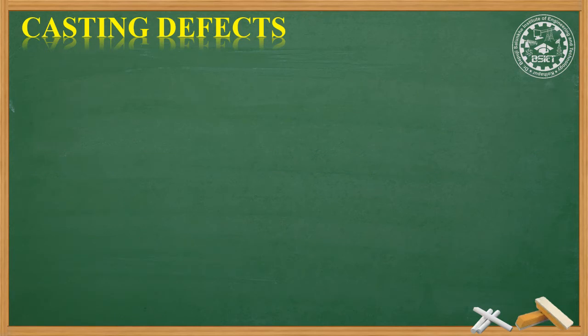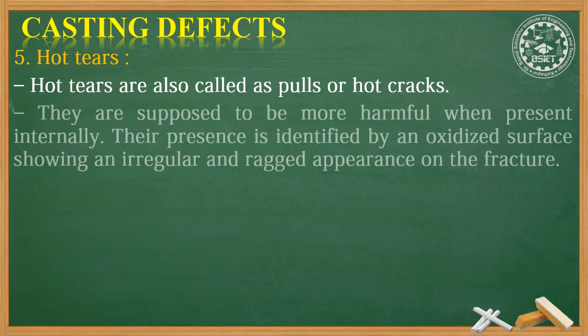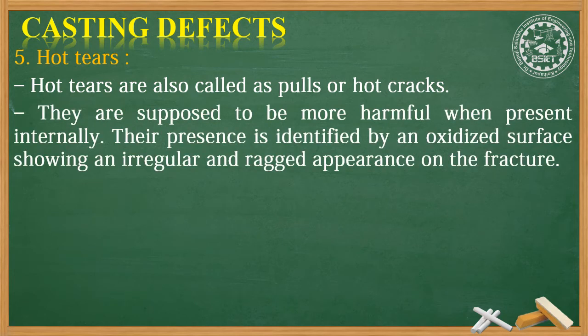The fifth casting defect is hot tears, also called pulls or hot cracks. They are supposed to be more harmful when present internally. Their presence is identified by an oxidized surface showing an irregular and ragged appearance on the fracture.